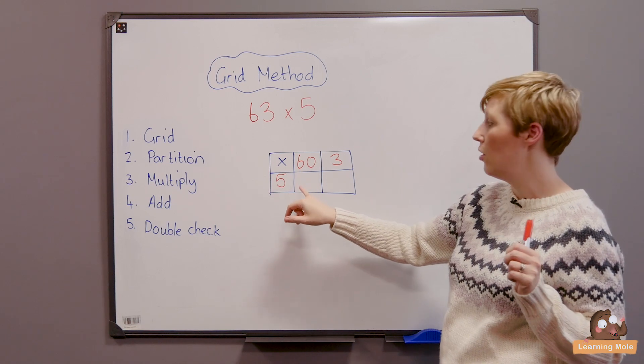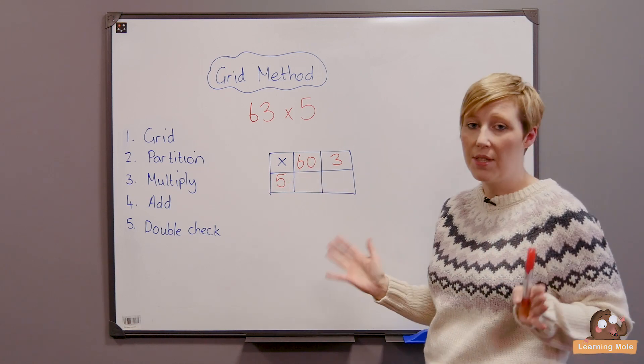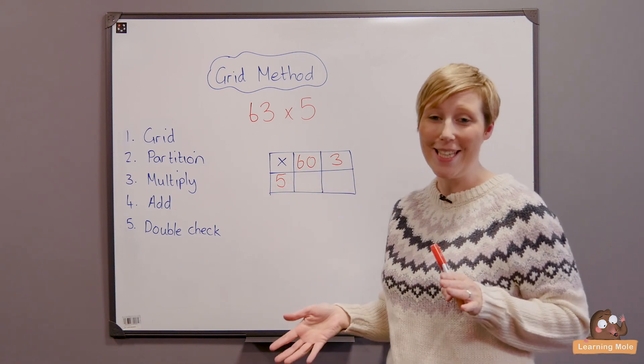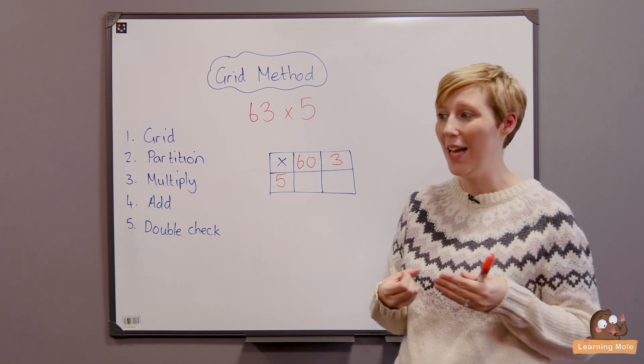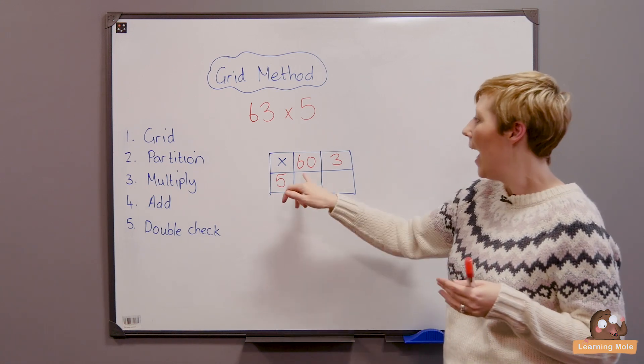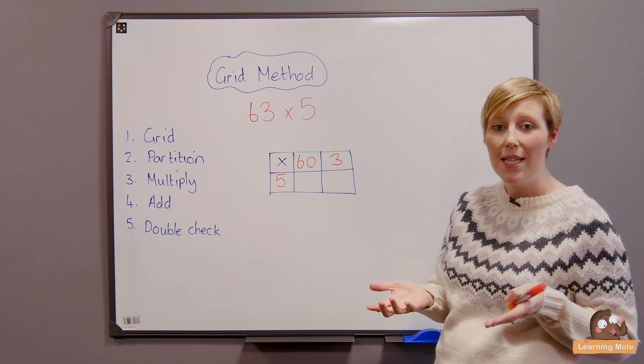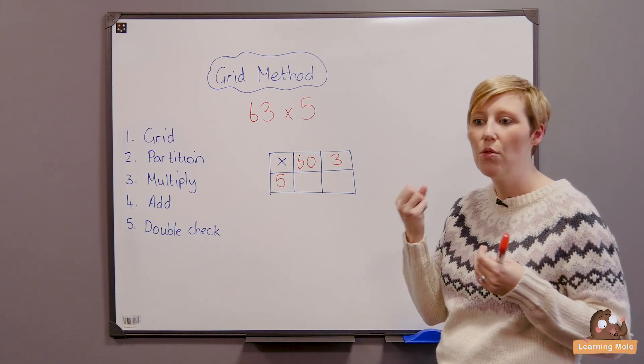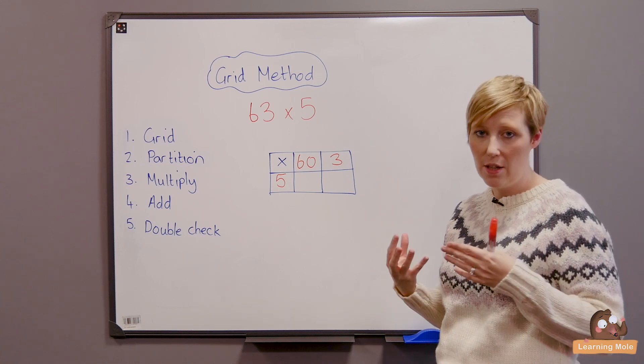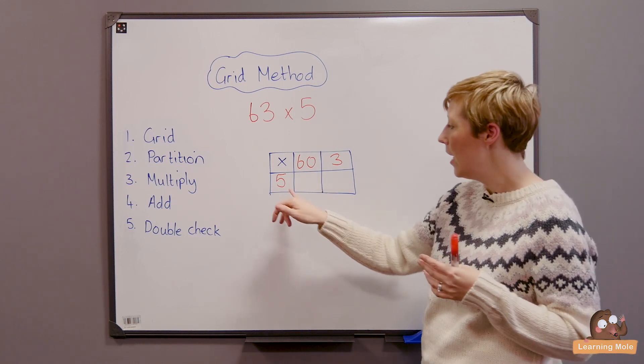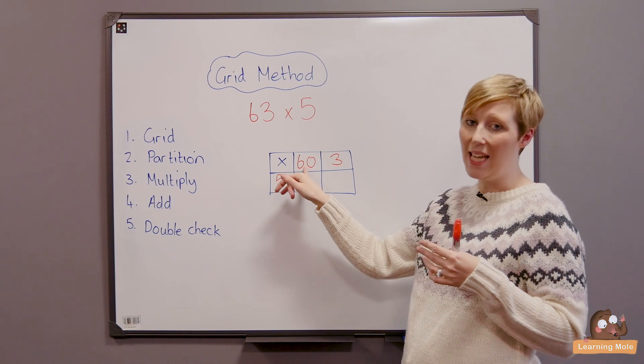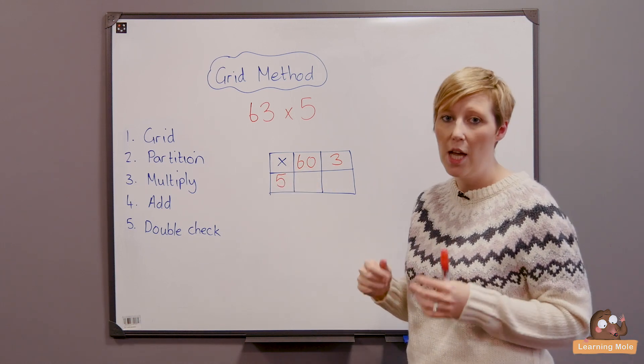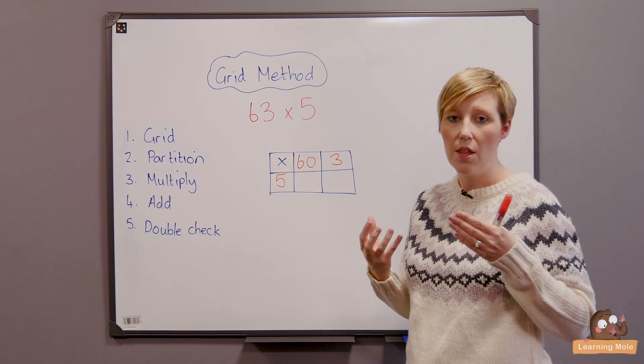So this is where I would say focusing on known facts. Nobody knows their 60 times tables. We don't learn our 60 times tables and that's the discussion I would have with the children. But we do know our 6 times tables and we do know our 5 times tables. So using those known facts which is a really good strategy within this method. So 5 times 6 is what I would tell them to look at. Though they know that 5 times 6 is 30.